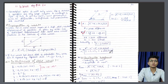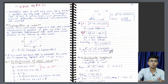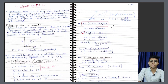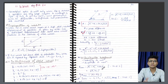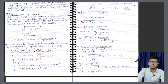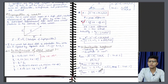Aur yahan se do interference hote hain — constructive ya destructive. Constructive mein kya hoga? Intensity aur amplitude dono hi maximum honge. Maximum kab hoga? Jab cos phi ka value yahan pe 1 ho jaye — yani ki jab angle will be 0, 2 pi, 4 pi — tab hamare paas cos phi ka value 1 milega. Jab solve karte hain, amplitude maximum kitna aata hai: a1 plus a2. Aur intensity kya ho jata hai: under root I1 plus under root I2 ka whole square.